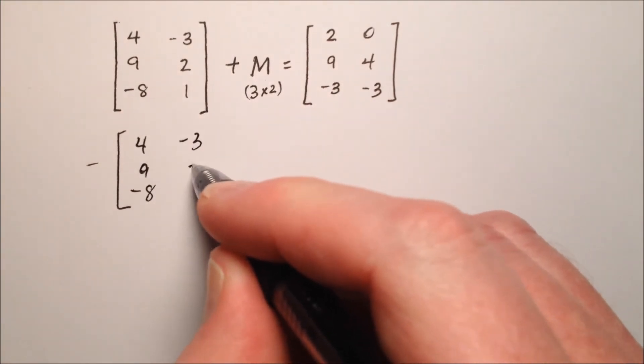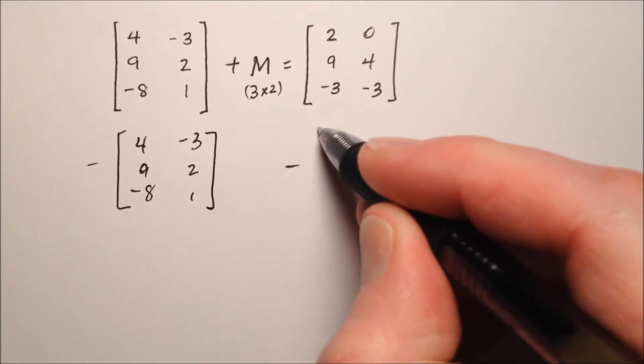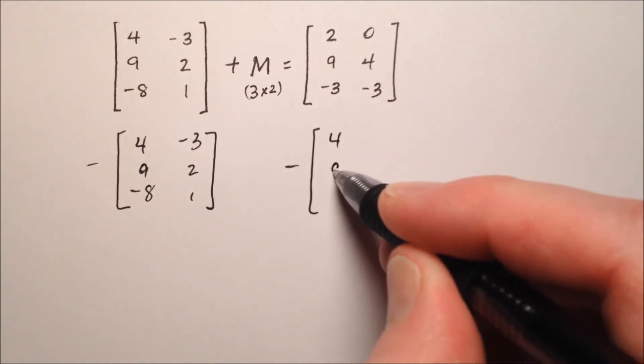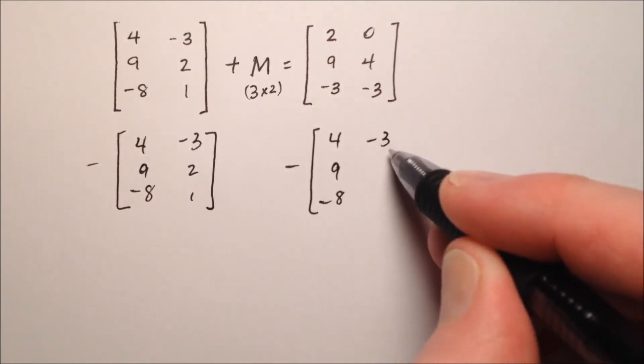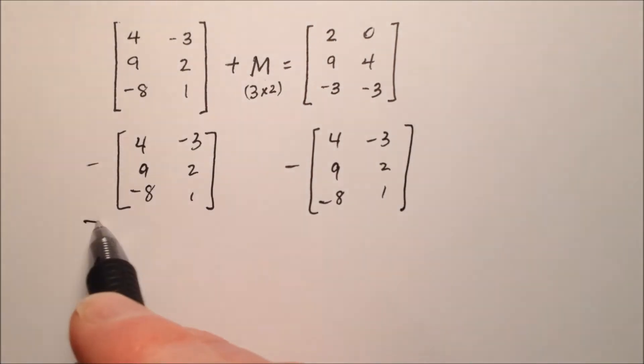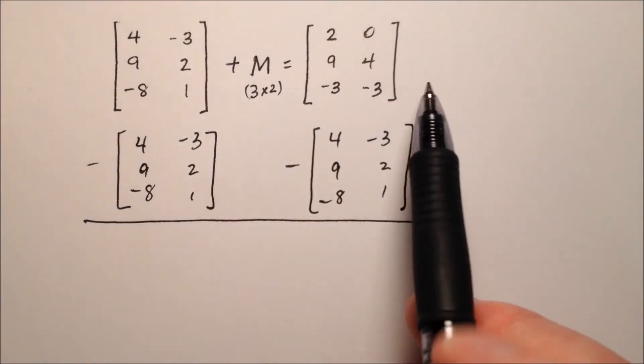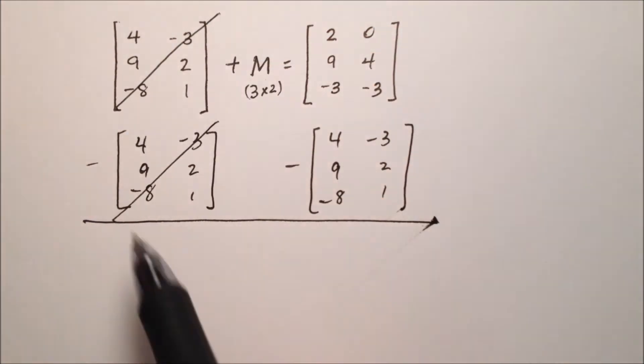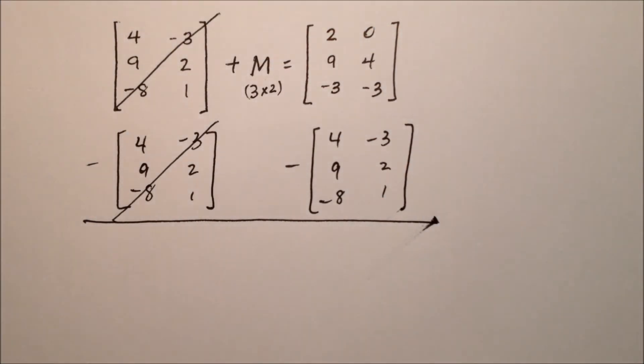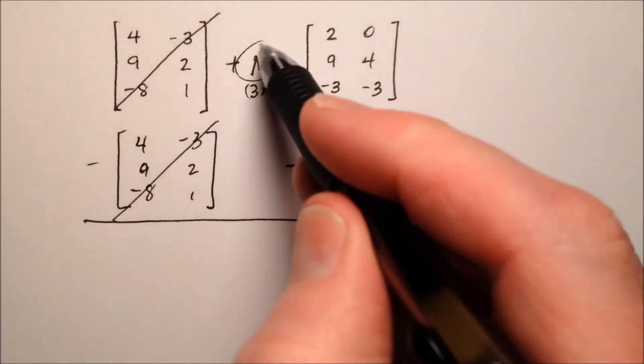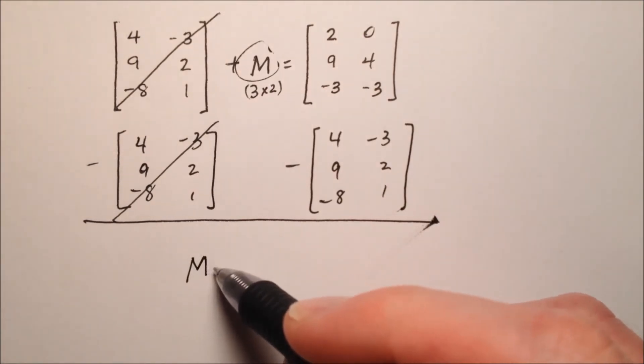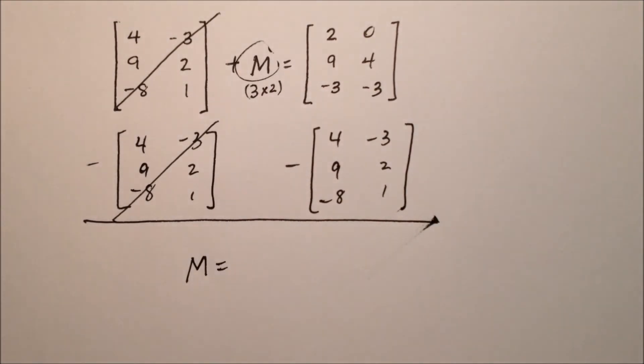So I'm just going to rewrite all this, and I'm going to use the subtraction notation here. There we go. So when I effectively do this, these cancel out because they're identical and they're being subtracted from one another. The M here is going to be all alone, and that's the point of that.